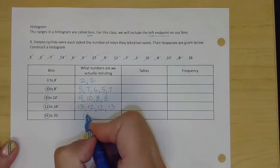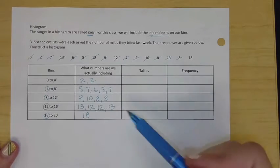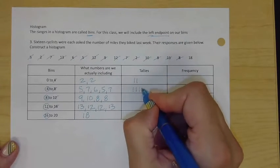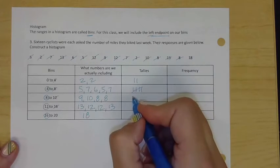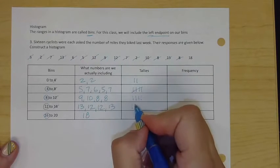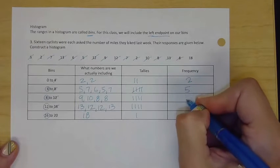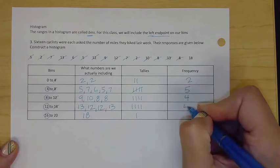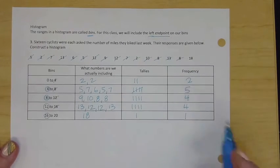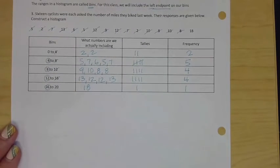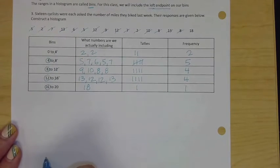Now we're going to tally them up. One two, one two three, four five, one two three four, one two three four and one. Then we'll just write the number. Seems a little redundant to tally them, I do understand, but that's okay.